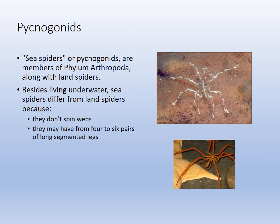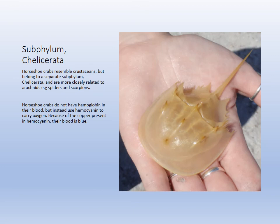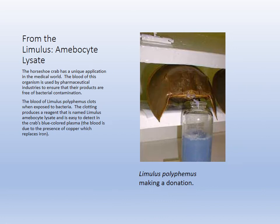Sea spiders don't spin webs but have fangs and live in the intertidal zone. Chelicerata includes our horseshoe crabs — the only living chelicerates. They have book gills, much like spiders and scorpions have book lungs. They're very unique: they have blue, copper-based blood used medically to test equipment for pollutants and toxins. The process is called milking, but it's really bleeding the horseshoe crabs.